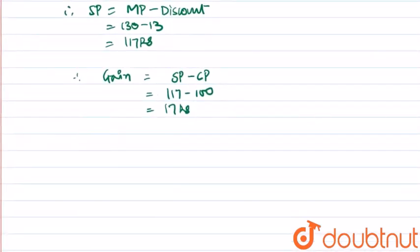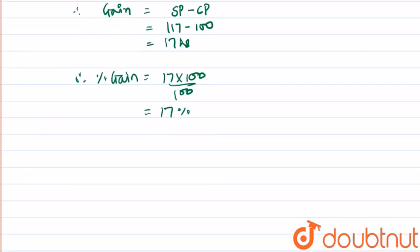Now we calculate the percentage gain equal to 17 divided by 100, multiplied by 100, equal to 17 percent. Therefore, we found that the gain is of 17 percent.